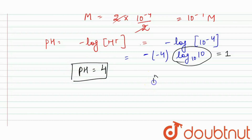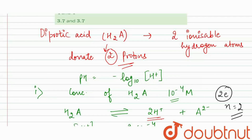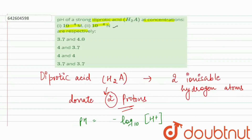In the first case we have 3.7, and in the second case we have 4. So our correct answer is 3.7 and 4 respectively. Thank you.